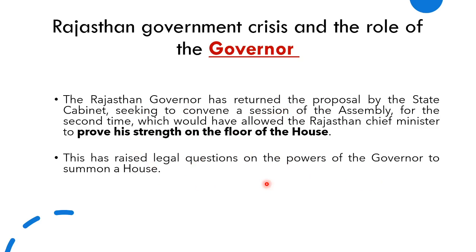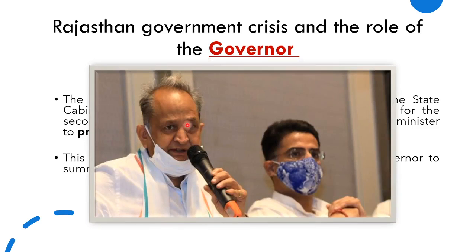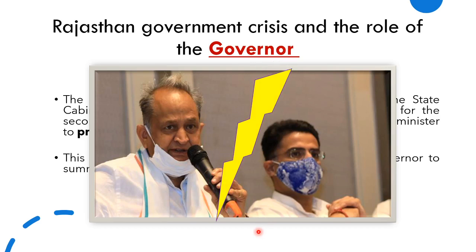Before understanding the legal questions, let us know what is happening in Rajasthan. Ashok Gehlot is the Chief Minister and Sachin Pilot was the Deputy Chief Minister. A rift came between them — Pilot went his own way. A rebellion happened within Congress, and this is why Ashok Gehlot's government was heading towards instability.